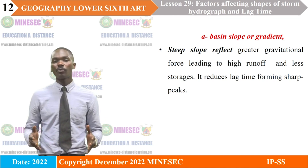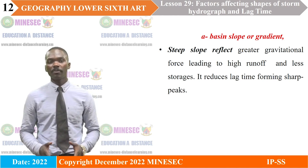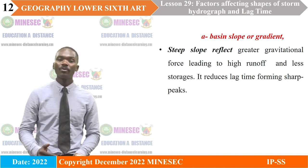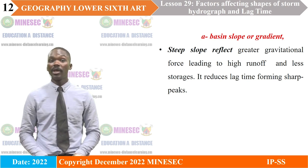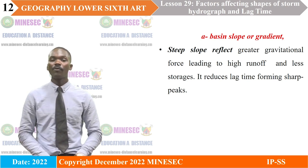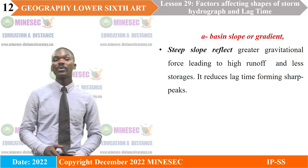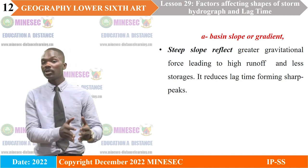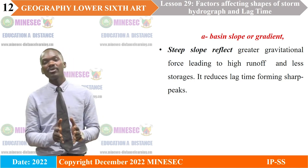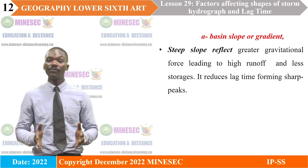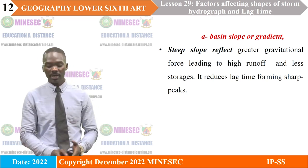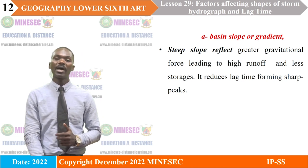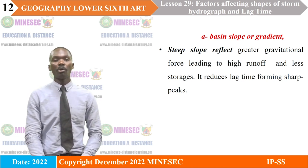The basin slope or gradient: steep slopes reflect greater gravitational force, leading to high runoff and less storage. This reduces lag time, forming sharp peaks, otherwise known as flashy peaks. Due to the steepness of the land, water is not stored easily. Therefore, water flows more rapidly, giving rise to rapid or sharp peaks, which are also known as the flashy storm hydrograph.